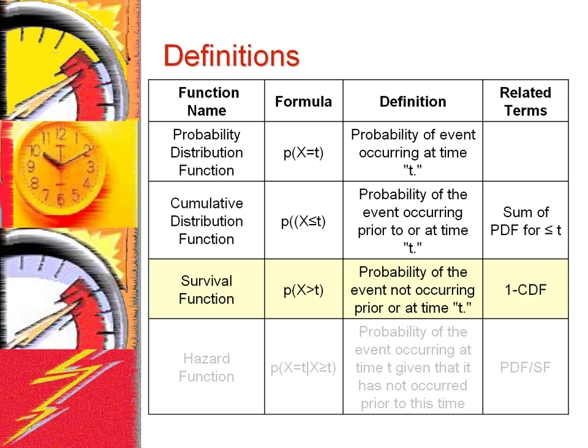The survival function gives the probability of surviving until after time period t. Note that the survival function is the complement of the cumulative distribution function and can be calculated as 1 minus the cumulative distribution function.